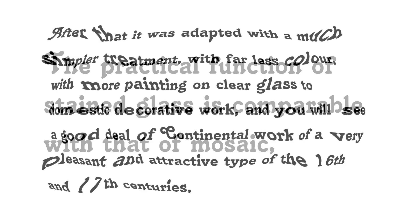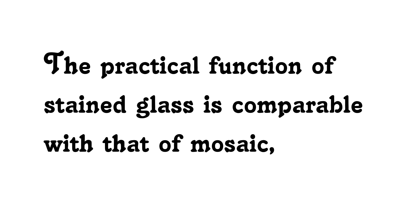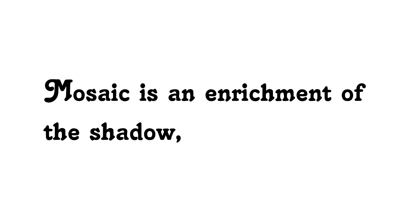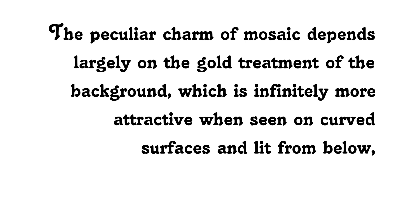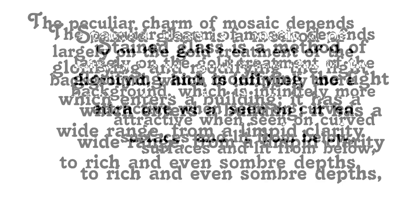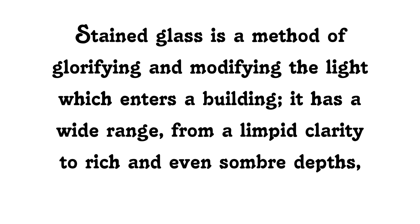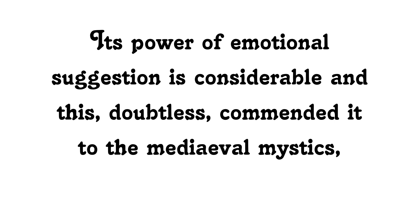The practical function of stained glass is comparable with that of mosaic. Mosaic is an enrichment of the shadow. Buildings designed for mosaic usually have quite small windows, and it is the mosaic enrichment of shadow, vaguely lit by reflected light from these windows, which gives it its highest beauty. The peculiar charm of mosaic depends largely on the gold treatment of the background, which is infinitely more attractive when seen on curved surfaces and lit from below. Stained glass is a method of glorifying and modifying the light which enters the building. It has a wide range from a limpid clarity to rich and even sombre depths. Its power of emotional suggestion is considerable, and this doubtless commended it to the medieval mystics.